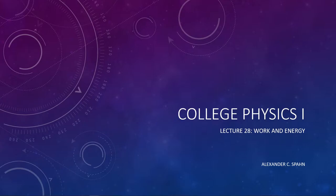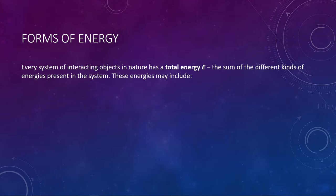The goal of this particular lecture is to basically set the foundation. We need to get ourselves somewhat familiarized with the basics of work and energy before we can actually bring it all back together in Lecture 29 to talk about conservation of energy. So let's begin by recognizing that when you have a system of interacting objects, they have a total energy. Energy is a word you hear all the time — we use chemical energy to heat our homes and bodies, electrical energy to run our lights and computers, and even solar energy to grow our crops and forests.